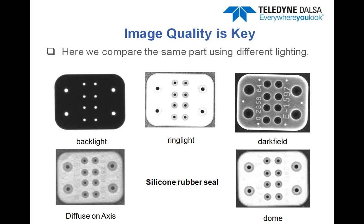Dark field would also be useful if you wanted to measure the diameter of the larger holes on this part, distinguishing through holes from indented holes. The lower right was taken with a dome light, which has the opposite effect of the dark field — it eliminates surface anomalies and creates a completely uniform lit surface so we can measure hole diameters without the optical noise of part numbers seen in the upper image. And finally, on the lower left is a diffuse on-axis light, also called a DOAL — D-O-A-L. It's often similar in effect to a dome, but in this case it's probably not the best choice for this part.